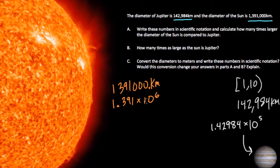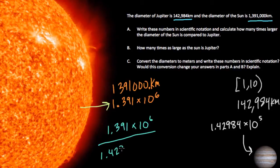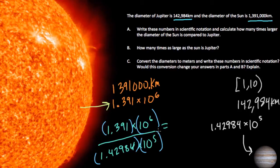So now they're asking us how many times larger is this number, the diameter of the sun, than this number, the diameter of Jupiter. So to solve that, we could just divide. So we have 1.391 times 10 to the sixth over 1.42984 times 10 to the fifth. When you're dealing with problems like this, what's nice is you can break this apart using the commutative and associative properties.